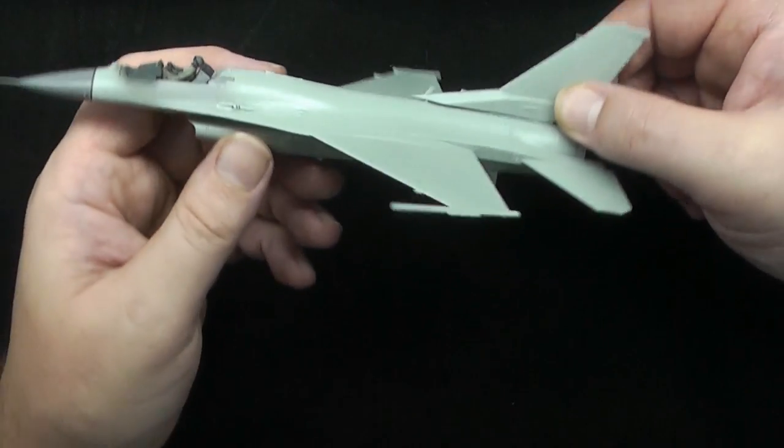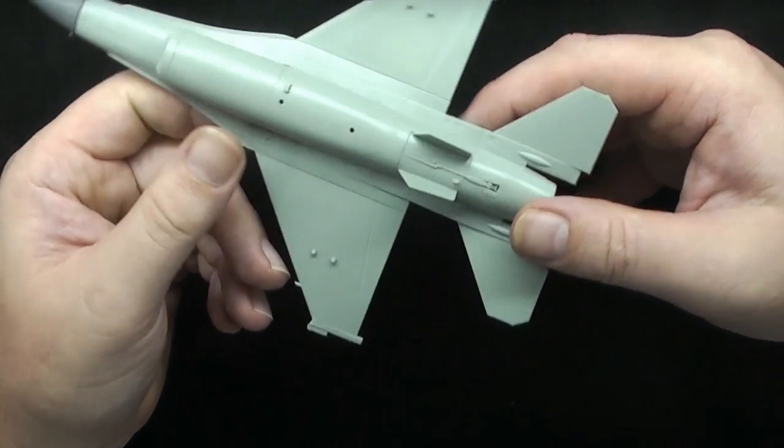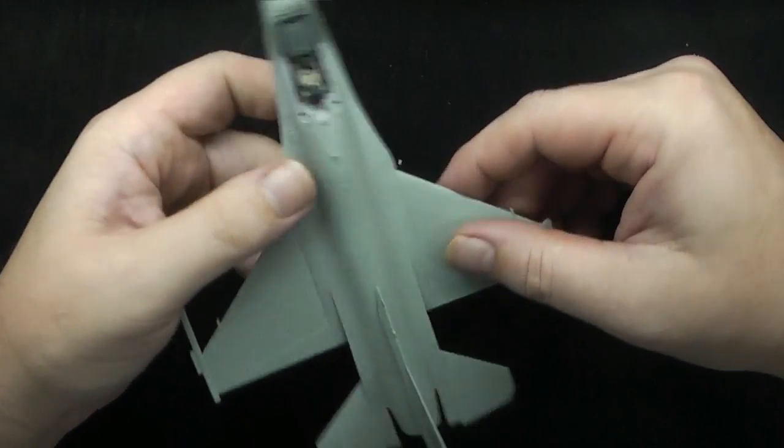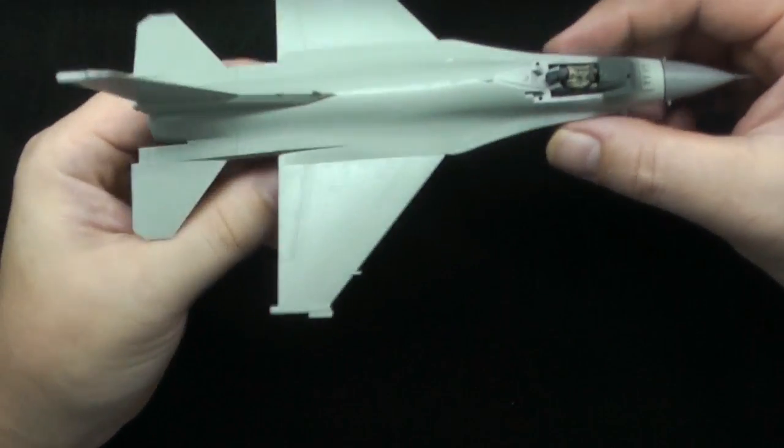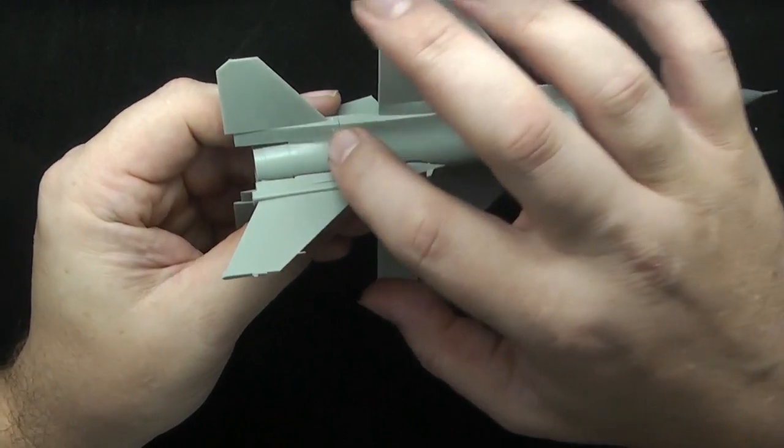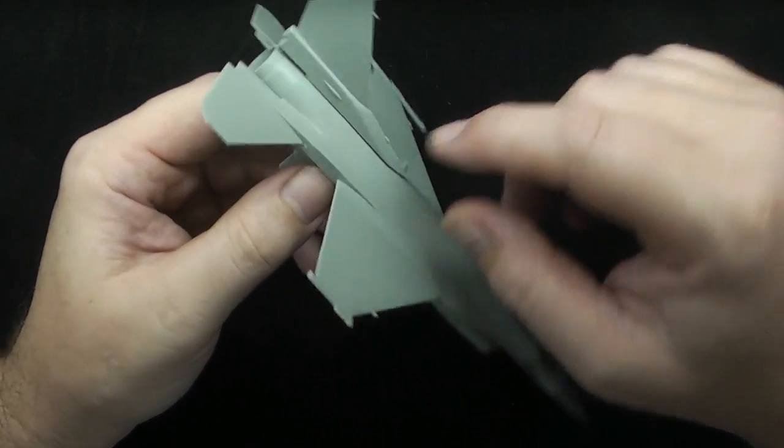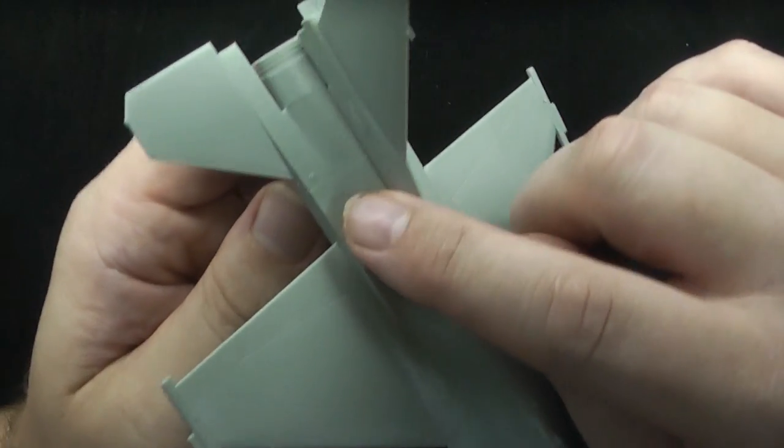Well, there it is. That didn't take very long, did it? That's the basic airframe assembled. You're not much to report, really. It goes together quite well. There's, yep, there's a, you can see a seam here, which I might just, on the back bit, which I might, let's see if the camera's picking that up.